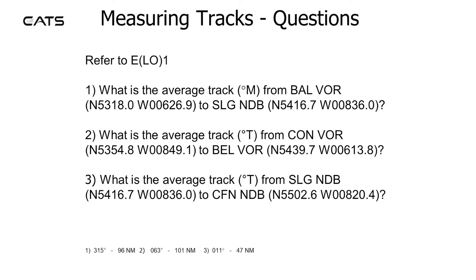Measuring tracks questions. Going to the chart: what is the average track magnetic from BAL VOR to SLG NDB? What is the average track true from CON VOR to Belfast VOR? What is the average track true from SLG NDB to CFN NDB?